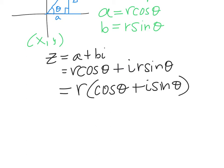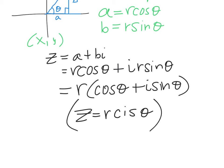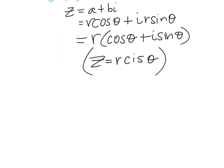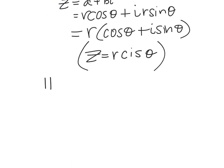Another notation they like to use is Z equals R cis theta — that's spelled c-i-s — which stands for cosine plus i sine theta. The book likes it; it's from Euler, who showed us that e to the i pi plus 1 equals zero. Now we're ready. Number two: we are going to learn how to go from complex form to polar and from polar to complex — both ways.